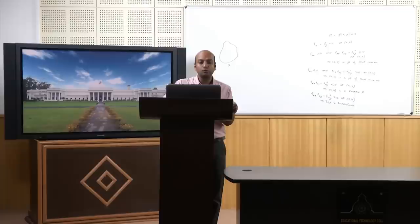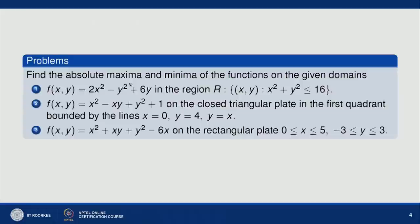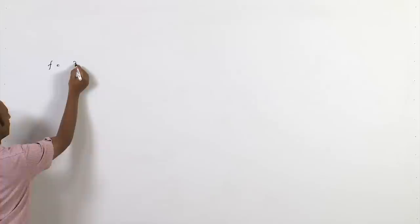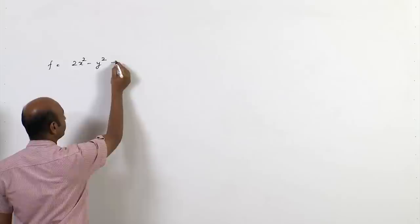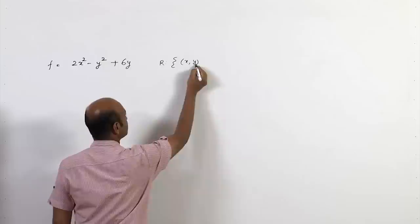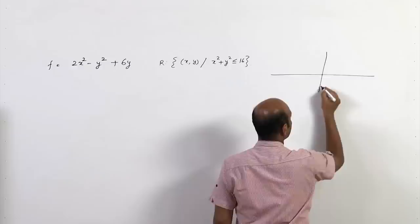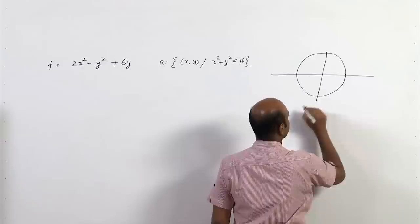Let us understand these steps by an example. We have to find the absolute maximum and minimum of f(x,y) = 2x² - y² + 6y on the region R = {(x,y) : x² + y² ≤ 16}, which is all points on or inside the circle of center (0,0) and radius 4.